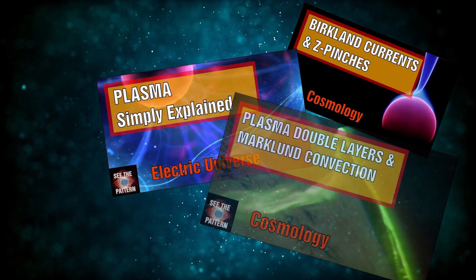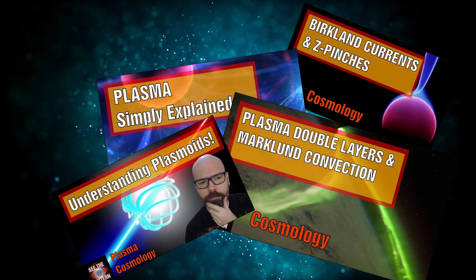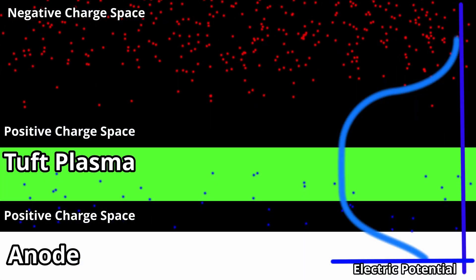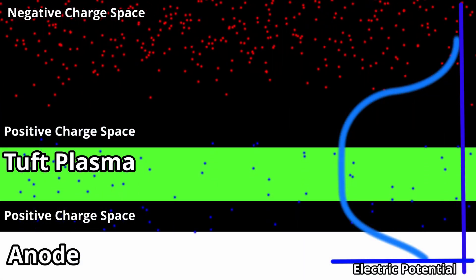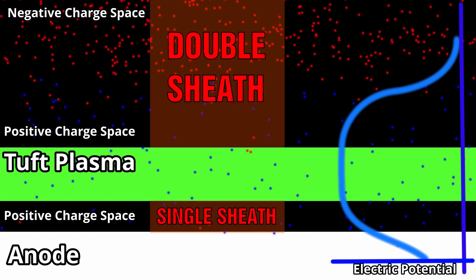We have talked many times about how plasma can organize itself. I have done some simple videos outlining double layers and we have seen how double layers play a critical role in understanding the Electric Sun model and most concepts within the Electric Universe.